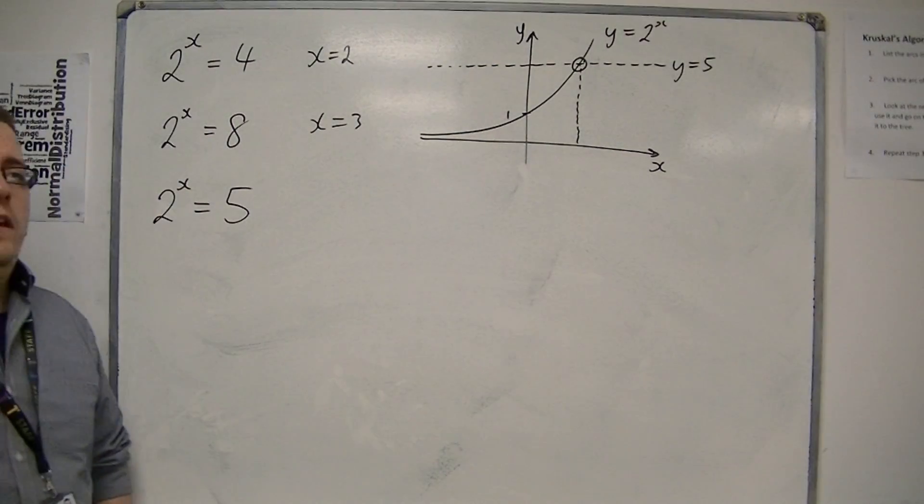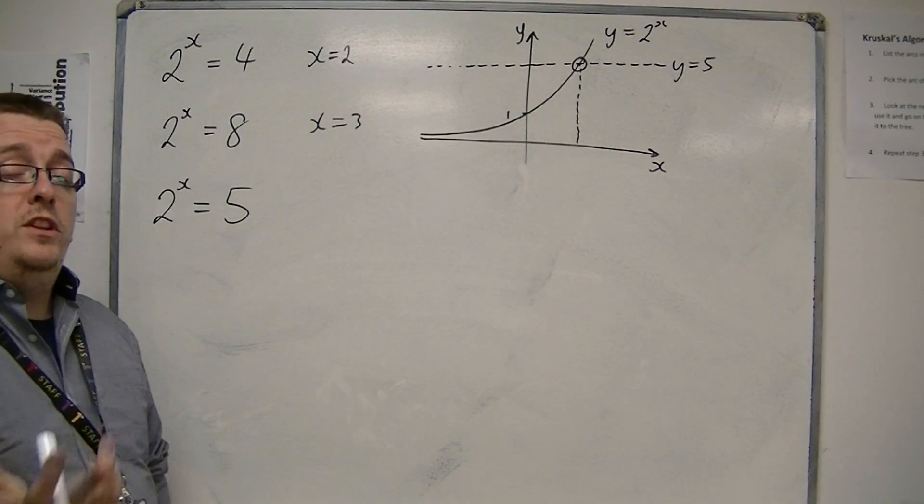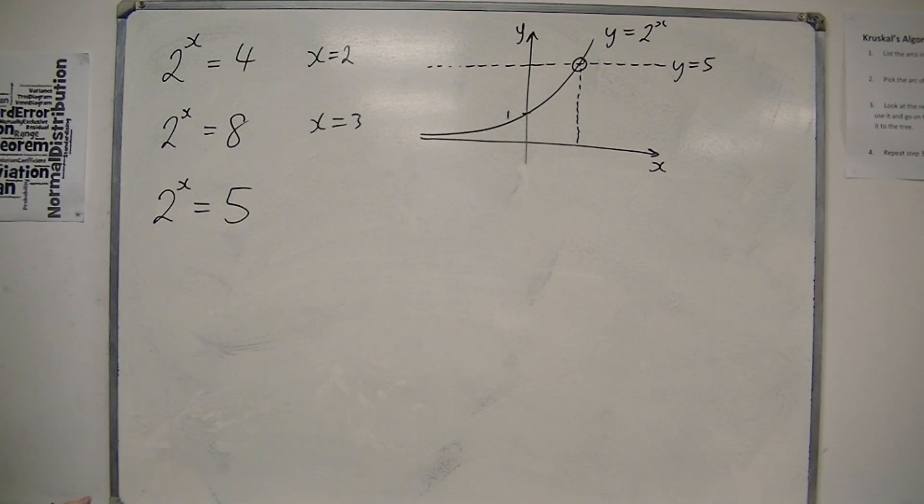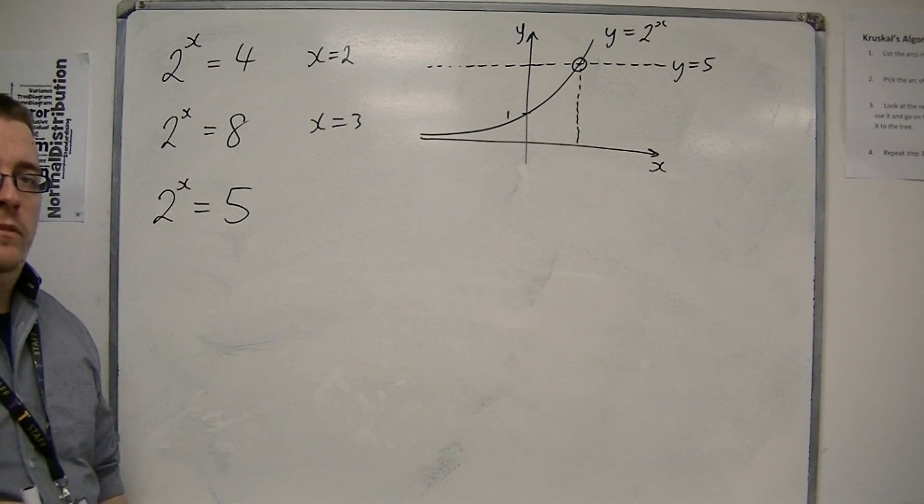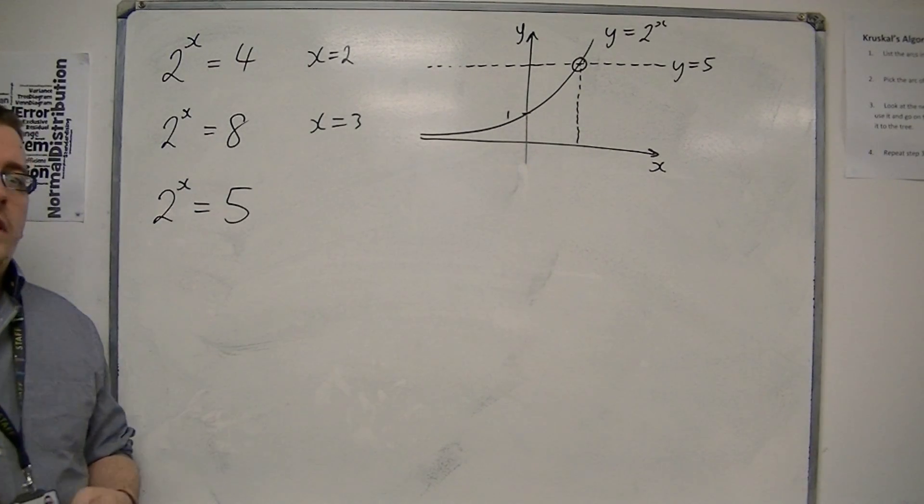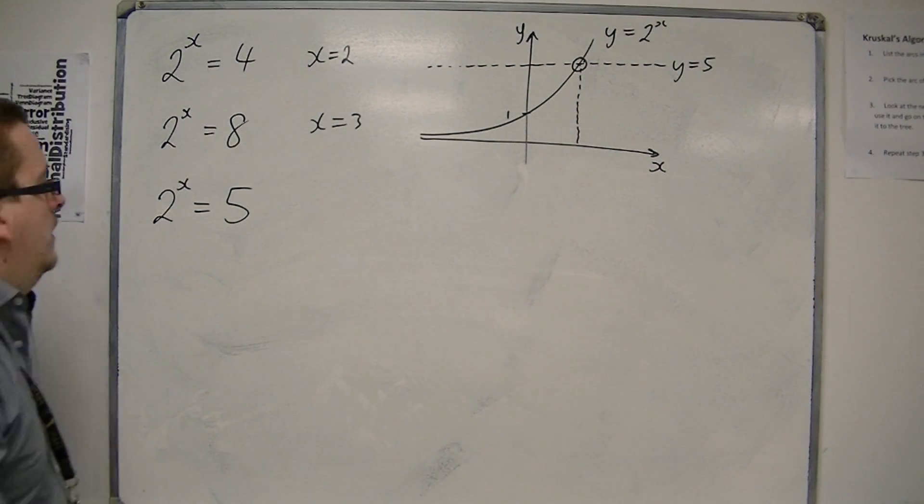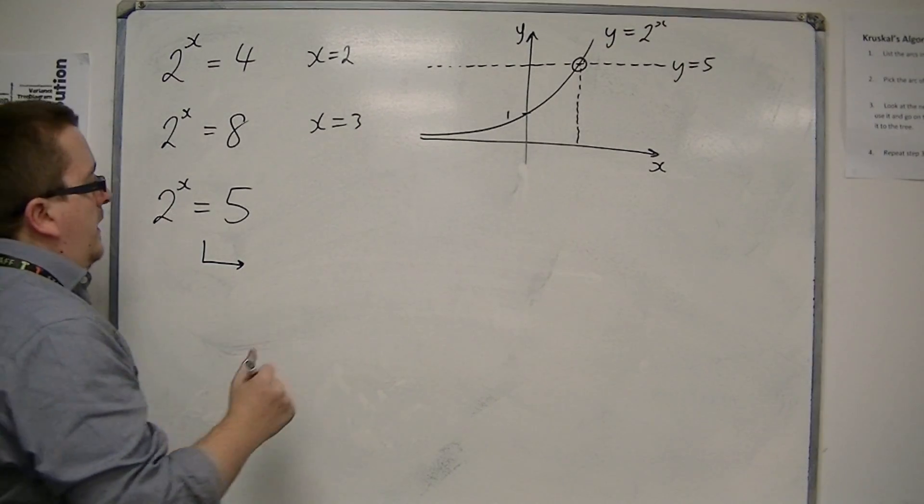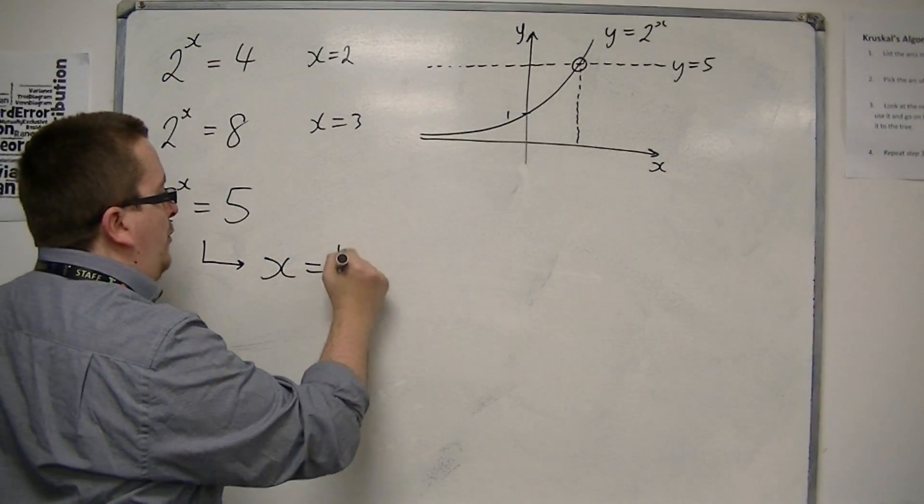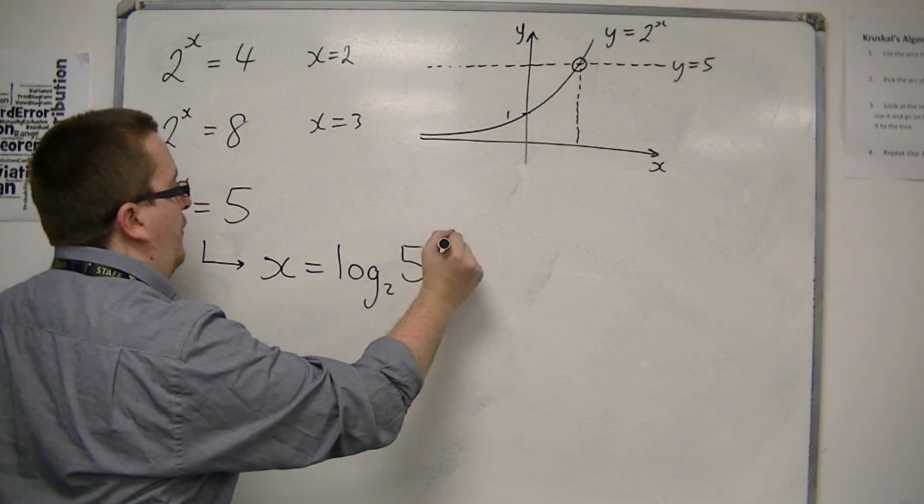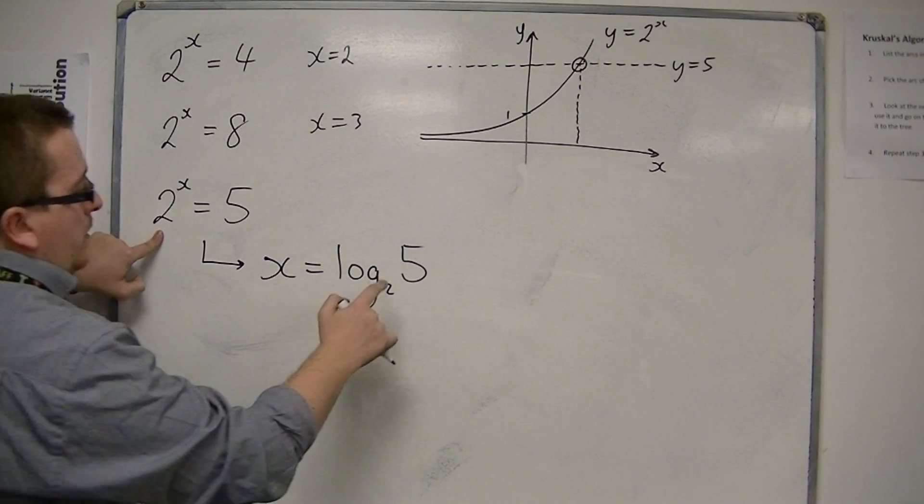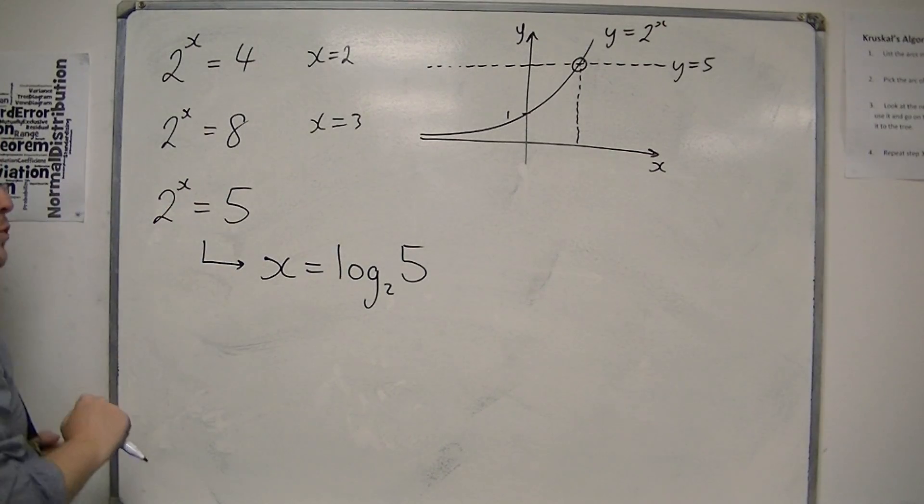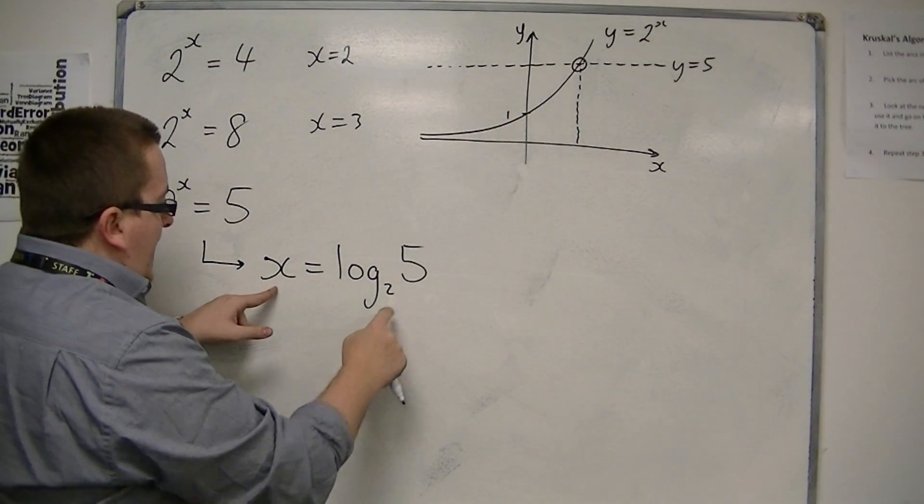Now this brings about the idea of using something that we haven't met before, known as logarithmic notation. So this is currently in index notation, and we are able to convert this into logarithmic notation. And that means that we're going to be writing it as x is equal to log base 2 of 5. Now the 2 is the base number, and the 5 is what 2 to the x would be equal to. So 2 to the x is equal to 5.